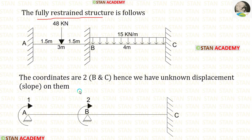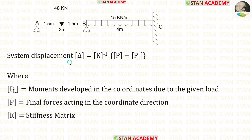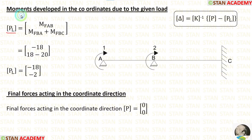Now let us make the coordinates diagram. In this analysis there are two coordinates at points A and B, since slope occurs only at those points. The coordinates should be made in the clockwise direction. The formula to calculate the slope values is: Delta = K⁻¹ × (P minus PL). First let us find the PL matrix, which represents the moments developed at the coordinates due to the given loads.